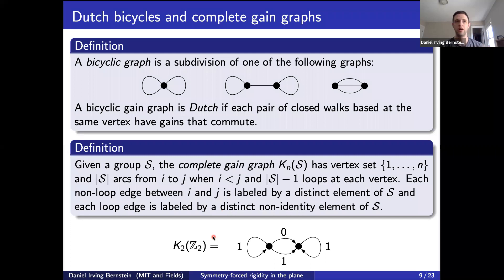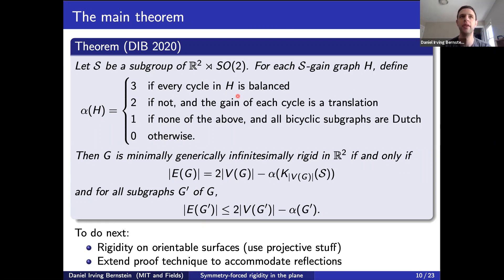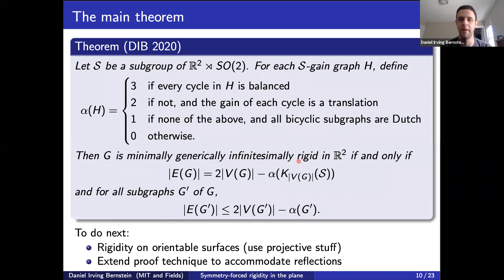Here is the theorem. Let S be a subgroup of the semidirect product of R^2 and SO(R^2) — the orientation-preserving Euclidean isometries, so reflections are not allowed. For each S-gain graph H, define α(H) to be 3 if every cycle is balanced, 2 if not but every cycle's gain is a translation, 1 if neither of the above but all bicyclic subgraphs are Dutch, and 0 otherwise. Then G is minimally generically infinitesimally rigid in R^2 if and only if the number of edges equals twice the number of vertices minus α of the complete gain graph on that vertex set, and for all subgraphs G', the corresponding inequality holds. This looks like Laman's theorem — a Maxwell count — except instead of 2v − 3, we have 2v minus a function depending on the gain labels.